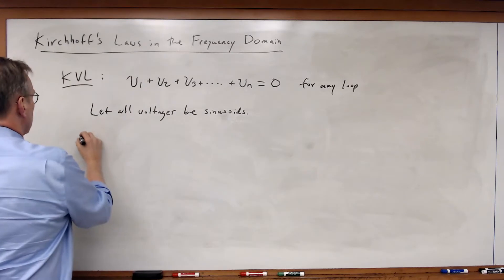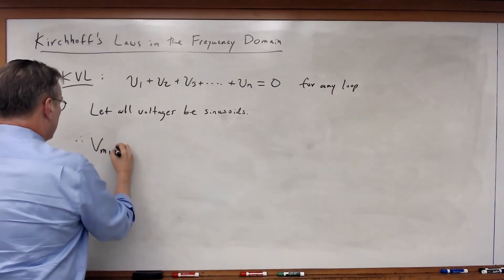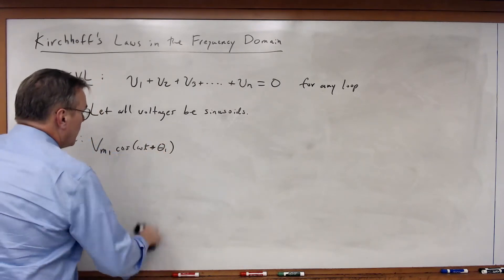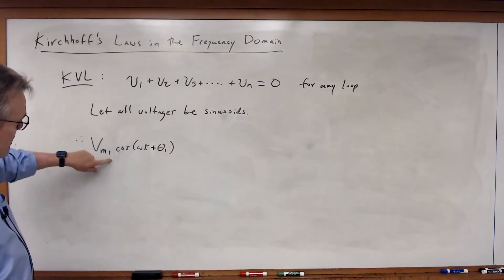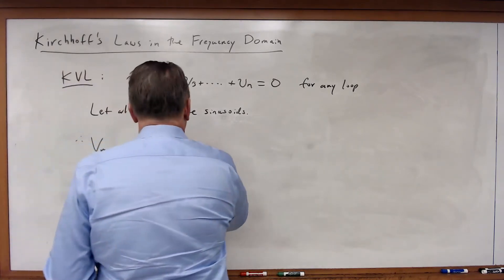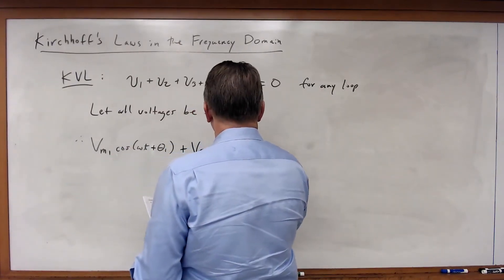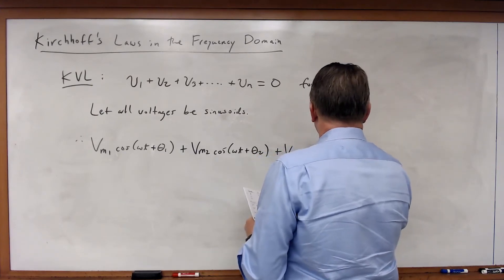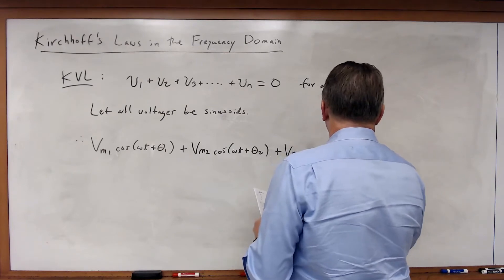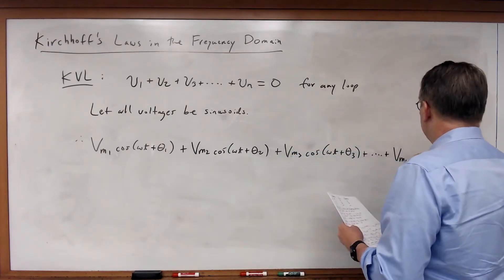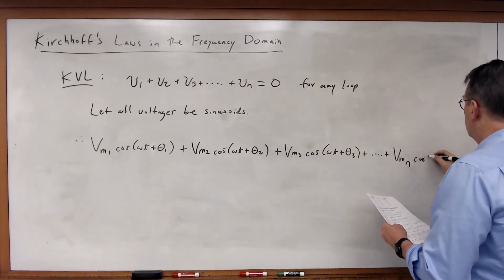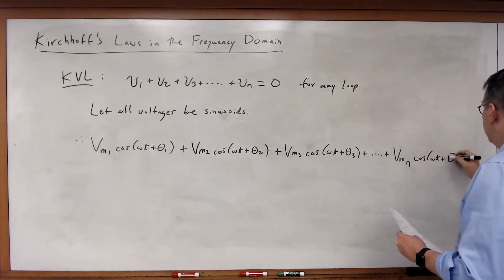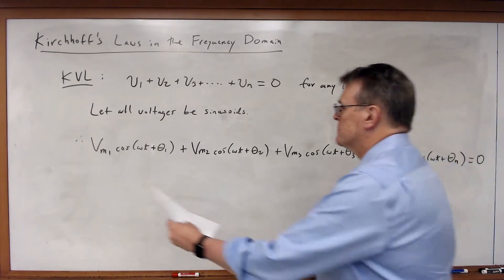If we do that, I can rewrite this and say this will be equal to Vm1 times cosine omega t plus theta 1. So V1 will have a magnitude of Vm1 and a phase angle of theta 1. And along the same lines, plus Vm2 times cosine omega t plus theta sub 2, plus Vm3 times cosine omega t plus theta sub 3, all the way to Vm sub n, assuming n voltages, times cosine omega t plus theta sub n, must be equal to zero.